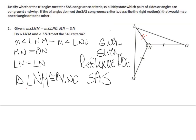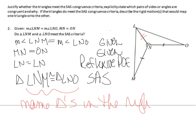Therefore, triangle LNM is congruent to triangle LNO because of SAS — side, included angle, side equals side, included angle, side. Note that it is very important to name the triangles in the correct order: L, N, M in one triangle corresponds to L, N, O in the other. They must be in the right order, or you get it wrong.